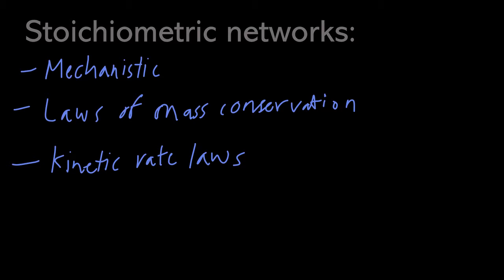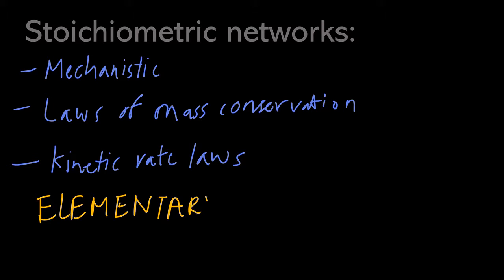Essentially these types of networks would show the conversion of one species into another, you would have some change in the mass available for further reactions, and this reaction would occur at a specific rate. Stoichiometric networks can be represented either as a set of elementary or non-elementary reactions.